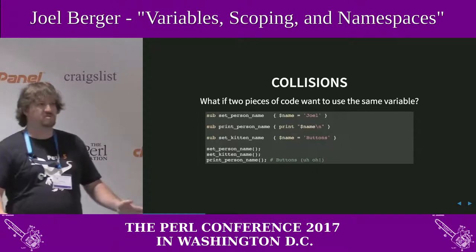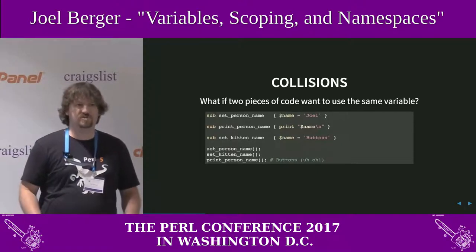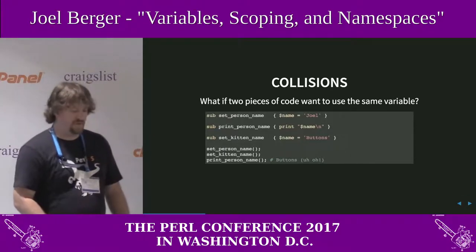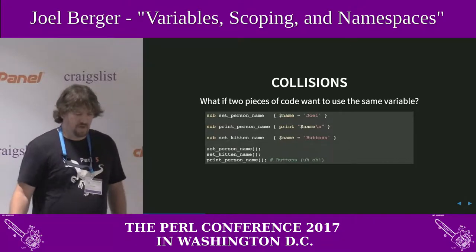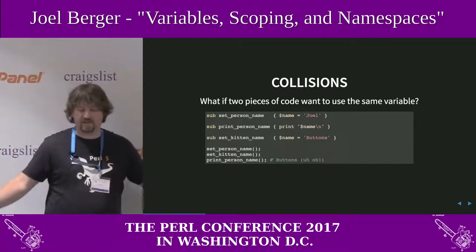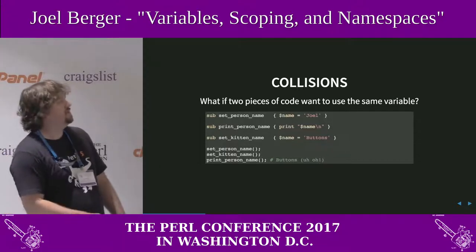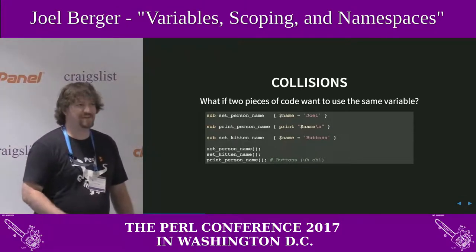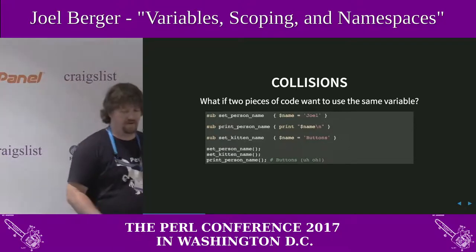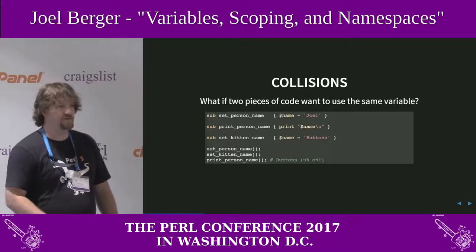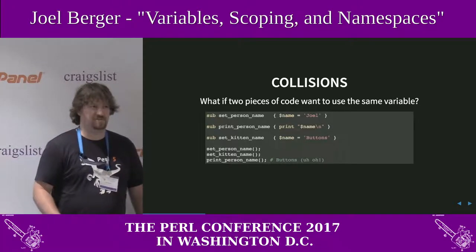So let's talk about collisions. You're writing a script and your script has a few functions. At some point you want to name something, so you've got set_person_name and name is Joel — that's me. And then later you want to print the name. Somewhere else you're going to set your kitten's name, and we're going to use 'name' again because we're writing quickly. Well, if your program runs set_person_name, then set_kitten_name, then print_person_name, suddenly my name is Buttons. And this is not what you mean.